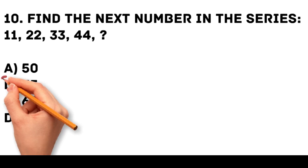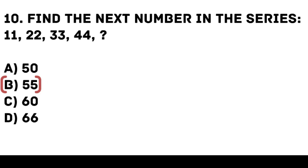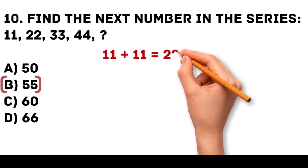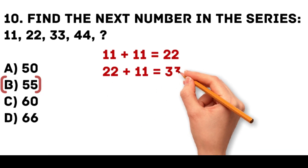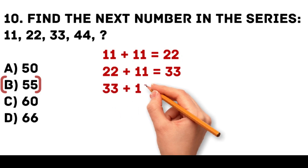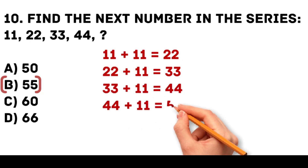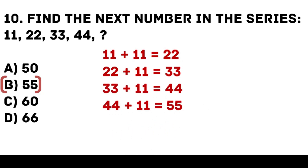Answer: B. 55. Each number in the series is increased by 11. 11 plus 11 is equal to 22. 22 plus 11 is equal to 33. 33 plus 11 is equal to 44. 44 plus 11 is equal to 55.